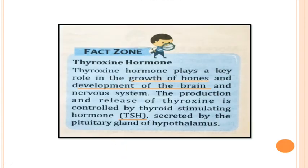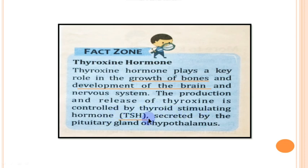Thyroxine plays a key role in the growth of bones and helps in the development of the brain, which is part of the nervous system. The release of thyroxine is under the control of TSH — thyroid stimulating hormone — which is secreted from the pituitary gland. And the pituitary gland itself is stimulated by the hypothalamus.